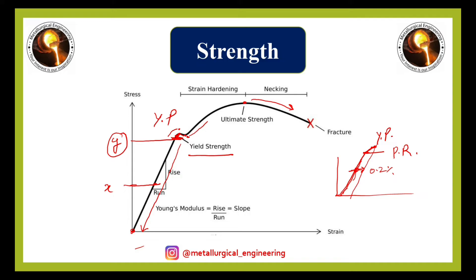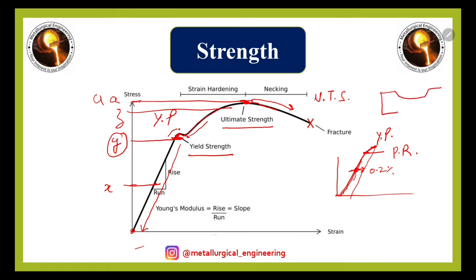From the yield point, the material again starts taking more load up to a point which is known as the ultimate tensile strength, or UTS. This is the point where the material is taking maximum stress. After this particular point, necking starts in the material. Necking means a neck-like shape starts to appear in the tensile specimen. After this point, the material continues to neck and eventually reaches a point where it fractures — this is known as the fracture point.